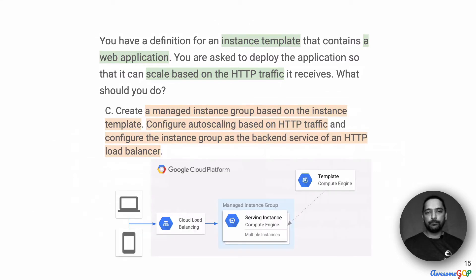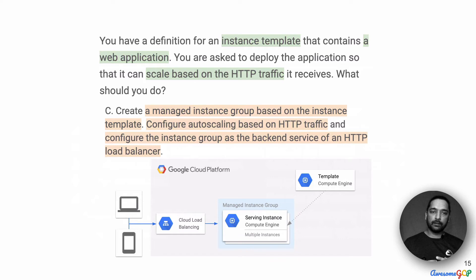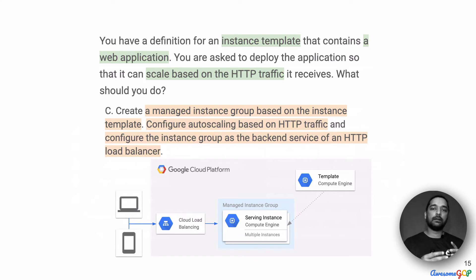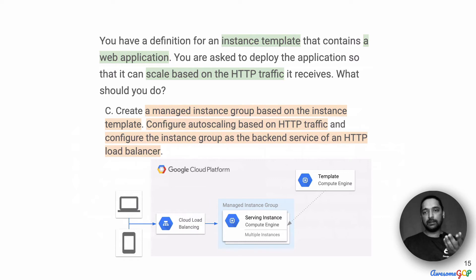How about option C? It suggests creating a managed instance group based on the instance template, configuring auto-scaling based on HTTP traffic, and configuring the instance group as a backend service of an HTTP load balancer. This looks right: we can create a managed instance group from an instance template, and since all machines come from the same template, whenever we scale up or down we are working with exactly the same kind of instance — which is very useful for scalability.